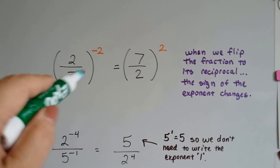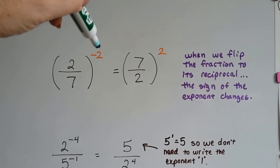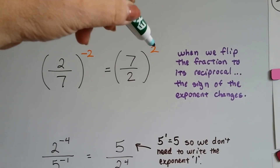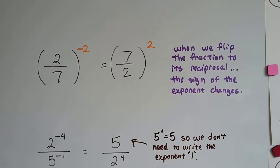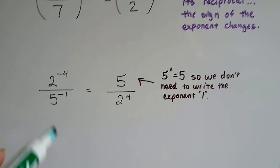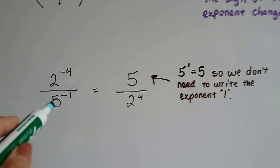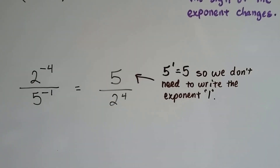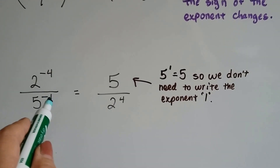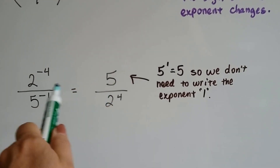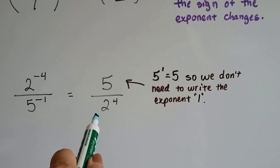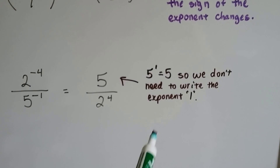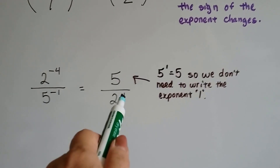If we had 2 sevenths inside parentheses to a negative 2 power, we would flip it around to its reciprocal — 7 over 2 — and it would become positive. When we flip the fraction to its reciprocal, the sign of the exponents changes. If we've got 2 to the negative 4th over 5 to the negative 1, when we flip it around to its reciprocal, the 5 doesn't need a little 1 up there. It did here because it had a negative 1 and we needed to put the 1 there, but now that we've flipped it to its reciprocal and it's positive, we don't need to write that little 1. We know 5 to the first power is 5, so we just don't write the 1. And then the 4 is positive.